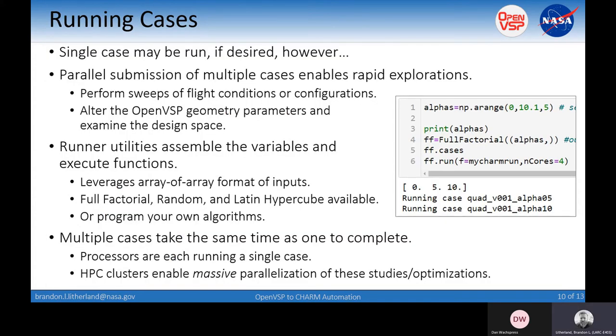If you're ready to run cases, you can build up these scripts, modify the input files, and execute a run. But the parallel submission of multiple cases really enables rapid explorations and trade space explorations. You can perform sweeps, alter the OpenVSP geometry, and start changing things like your rotor diameter, twist distribution, chord distribution, vehicle size, placement of rotors. If you can do it through the API, you can do it here.